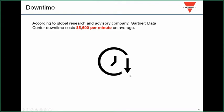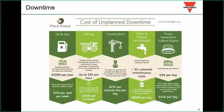Let's take a look at what downtime is all about. Downtime is very expensive. According to Gartner, a global research company, the average cost of downtime in a data center is $5,600 per minute. That's astonishing to me. And data centers don't have an exclusive on this—it impacts industries across the board.